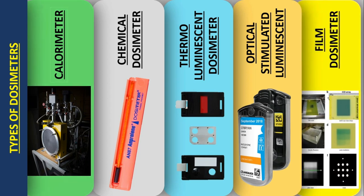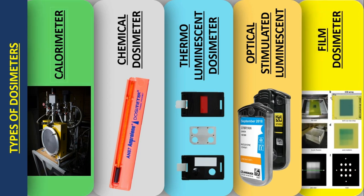Finally, we have the film dosimeter. Radiochromic film consists of a single or double layer of radiation-sensitive microcrystals on a thin polyester base. The color of the film becomes dark when exposed to radiation, and the darkness of the film increases with an increase in absorbed dose.